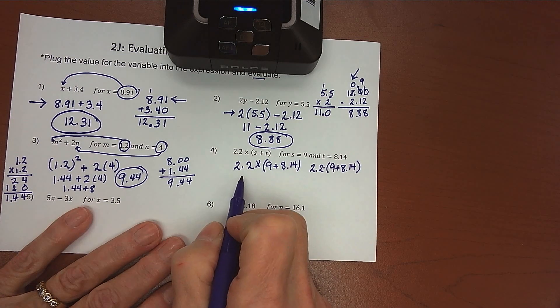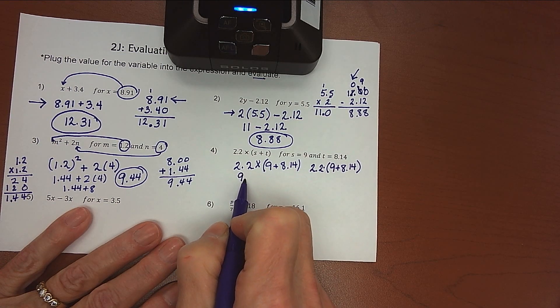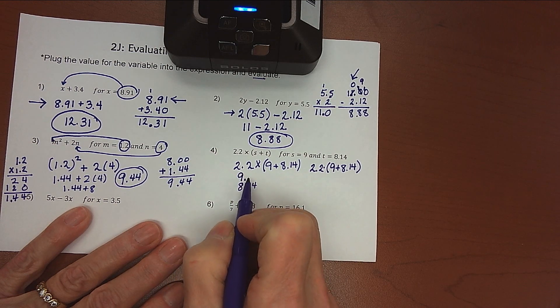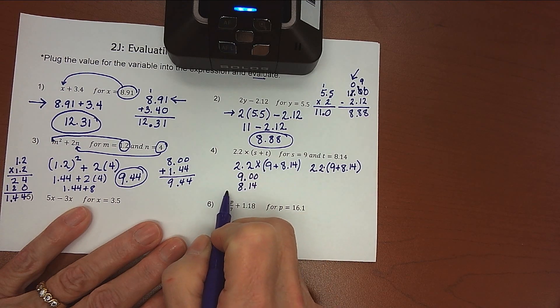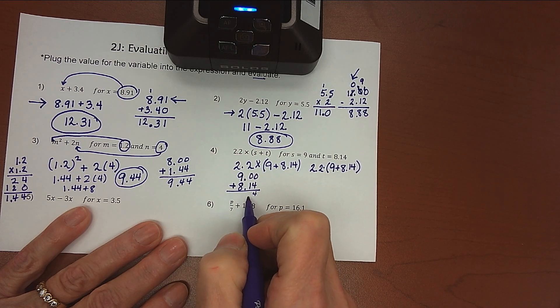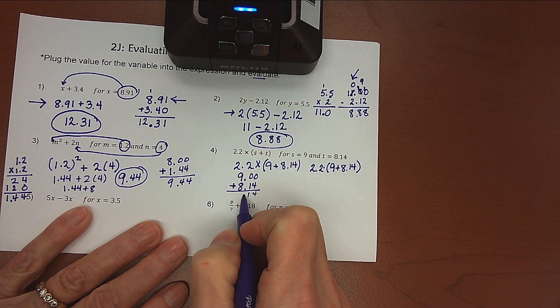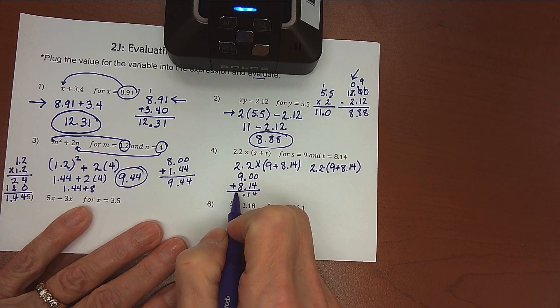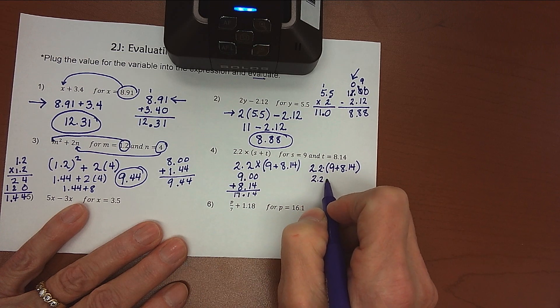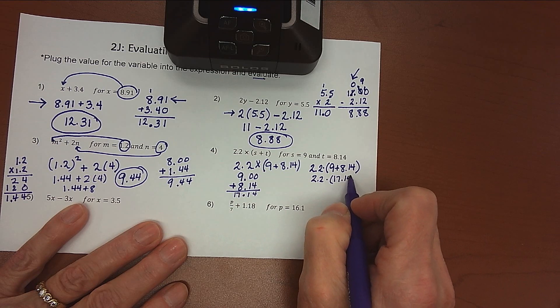We do parentheses first. And so I have 9, decimal point after the 9, and I'm adding 8.14. Add a couple of 0's there for placeholders. Remember that I'm adding. 0 plus 4 is 4. 1 plus 0 is 0. Bring my decimal point down. 9 and 8 is 17. And so inside my parentheses, we have 17.14.